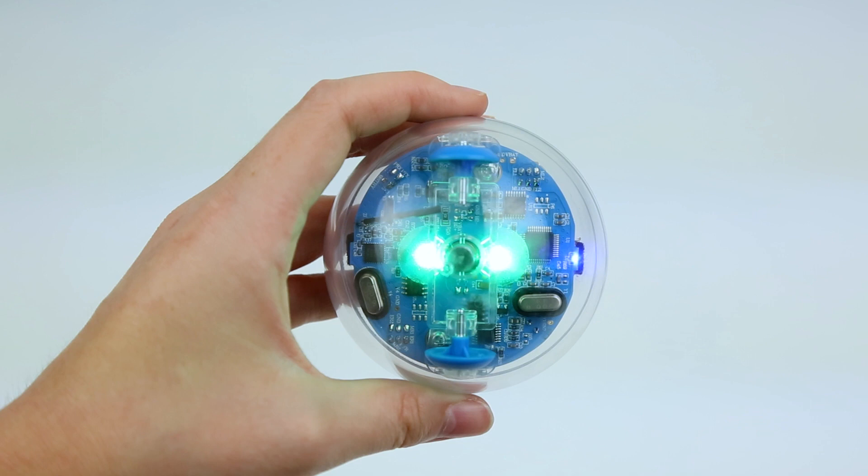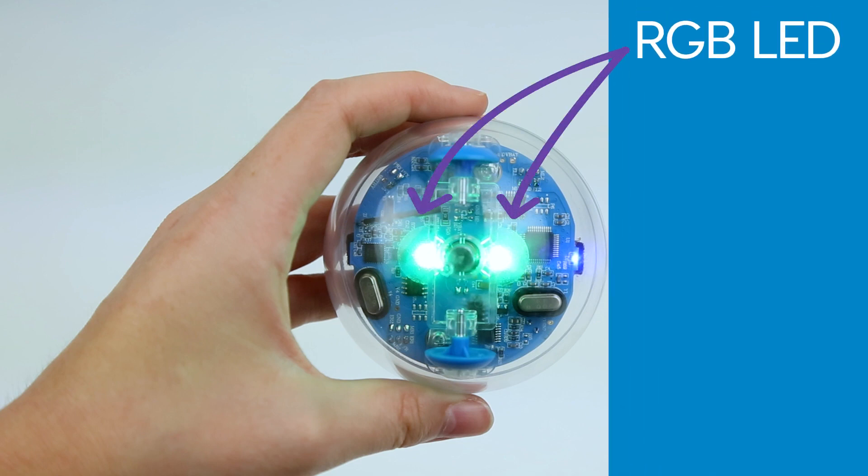There are 3 LED lights inside Sphero. The first two are the main RGB lights on top, which means that each one is made up of 3 diodes: R for red, G for green, and B for blue.